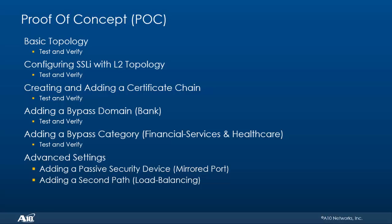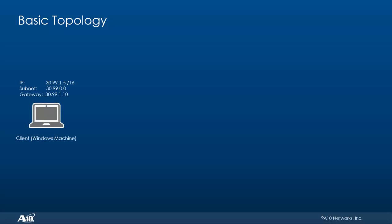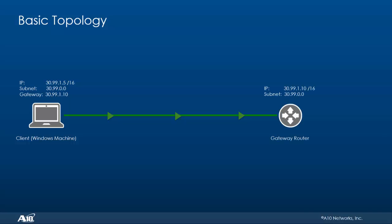Let's look at the basic topology. We have a client machine — a Windows machine with IP address 30.99.1.5/16 on subnet 30.99.0.0, with a gateway of 30.99.1.10. Traffic flows from the client machine towards the gateway router, which has the IP address 30.99.1.10/16 and is on the same subnet. We can reach the internet from the client through the gateway. Later we'll change this into an L2 topology with an SSLi device in the middle.